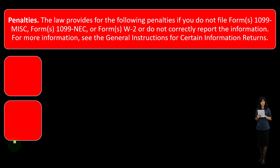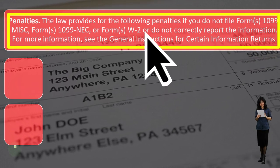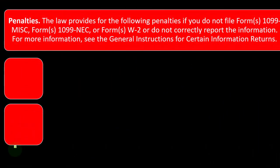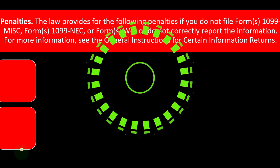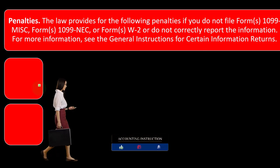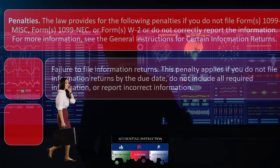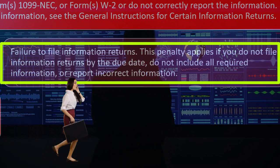The law provides penalties if you do not file Forms 1099-MISC, 1099-NEC, or W-2 — or do not correctly report the information. We're trying to avoid those sticks of penalties and interest. These are things businesses are forced to do. Failure to file information returns: this penalty applies if you do not file information returns by the due date, do not include all required information, or report incorrect information.